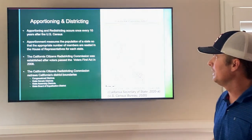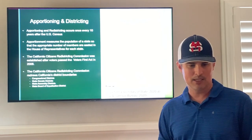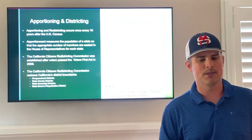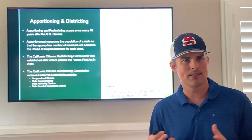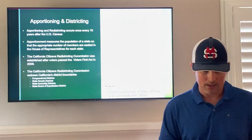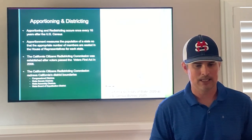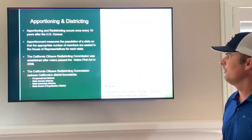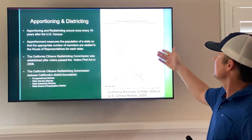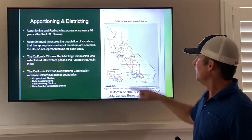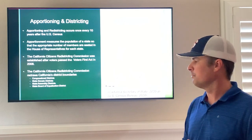Apportioning and districting occurs once every 10 years after the US census. Apportioning adjusts the appropriate number of members seated in the House of Representatives for each state, based on how many people live there, as identified by the US census. The California Citizens Redistricting Commission was established after voters passed the Voters First Act in 2008, and this commission redraws California's district boundaries. As shown in figure three, there are state congressional districts, state assembly districts, and state board of equalization districts.